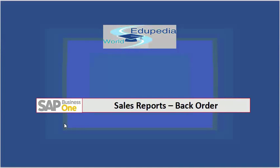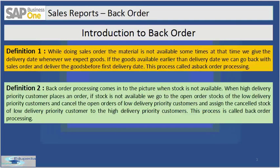Thank you for watching a Wikipedia World video. In this session on sales reports, we'll see about backorder. On the internet you would find many definitions of backorder, and this is because it depends on your business process.